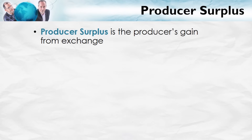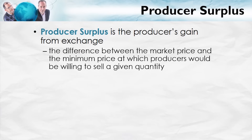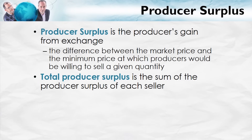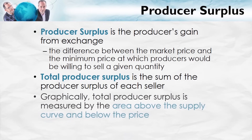Producer surplus is just the producer's version of consumer surplus. Consumer surplus is the consumer's gain from exchange, so producer surplus is the producer's gain from exchange. It's the difference between the market price and the minimum price at which producers would be willing to sell a given quantity. Total producer surplus is the sum of the producer surplus of each seller, and graphically, total producer surplus is measured by the area above the supply curve and below the price.